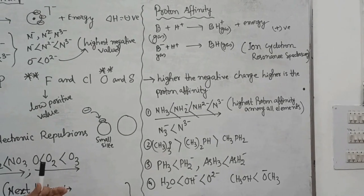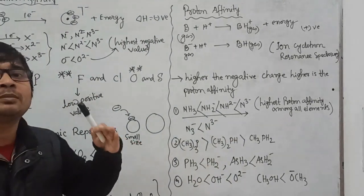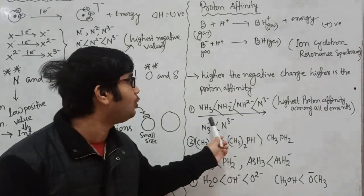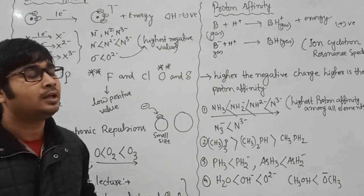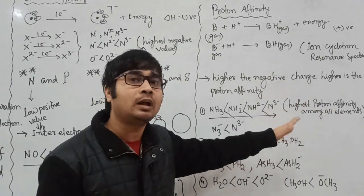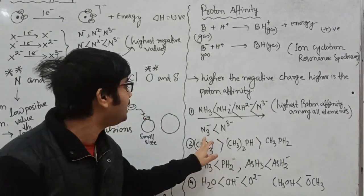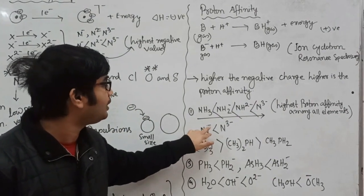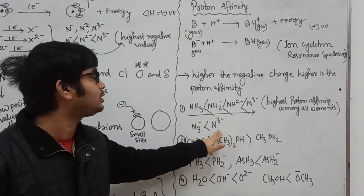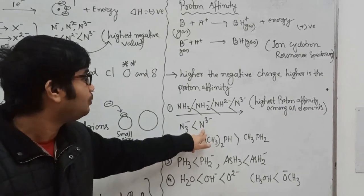Consider the examples: ammonia (NH₃), NH₂⁻, and N³⁻. Among these, N³⁻ has the highest proton affinity. In fact, N³⁻ has the highest proton affinity among all elements — it is element 7 in the periodic table. Now, comparing N₃⁻ (one negative charge, three nitrogen atoms) with N³⁻ (one nitrogen atom, three negative charges): N³⁻ has higher electron density, and therefore higher proton affinity than N₃⁻.